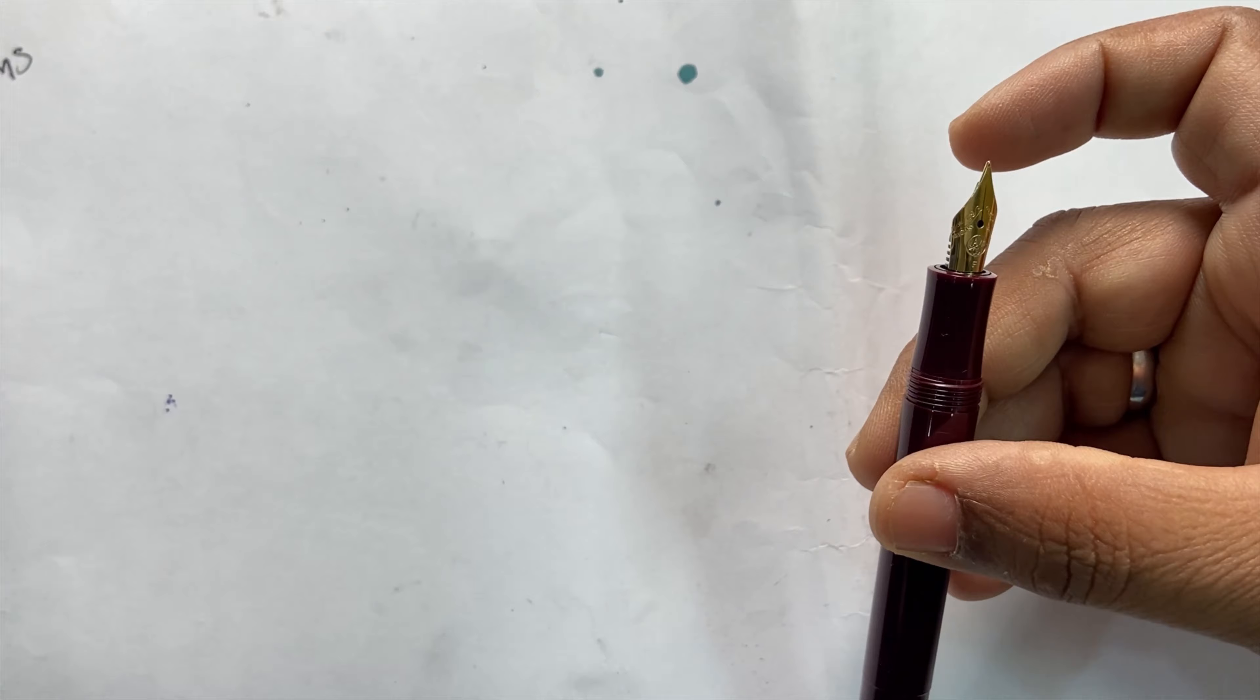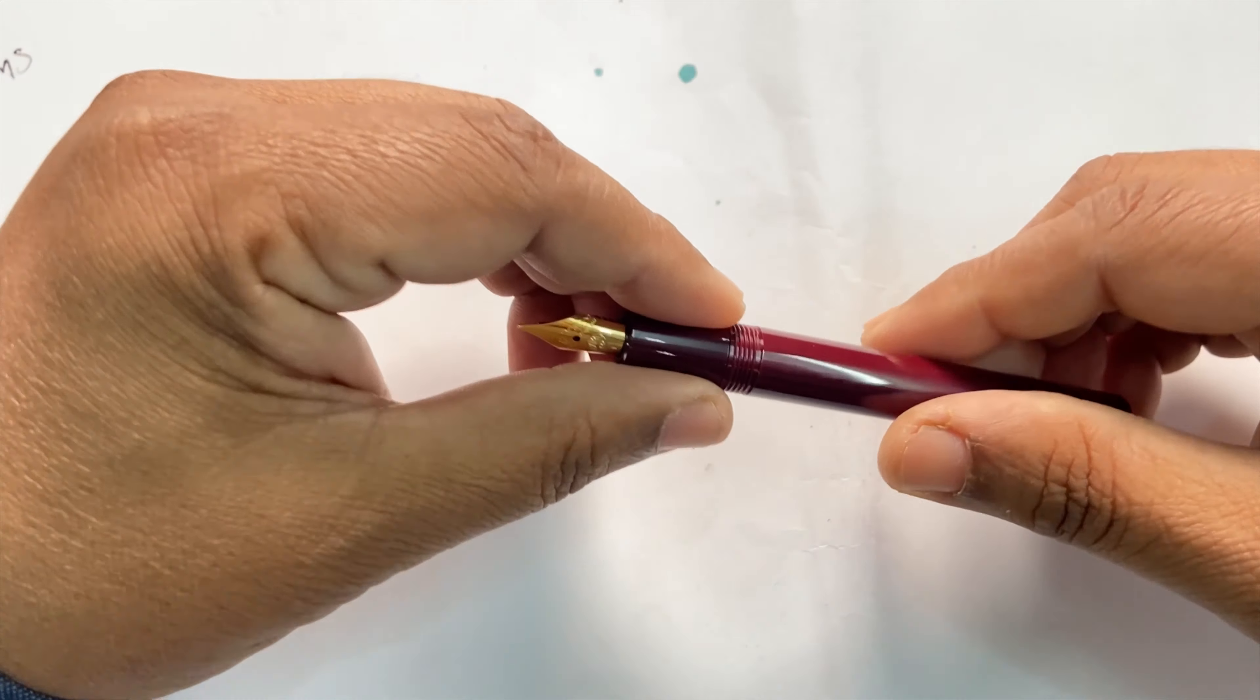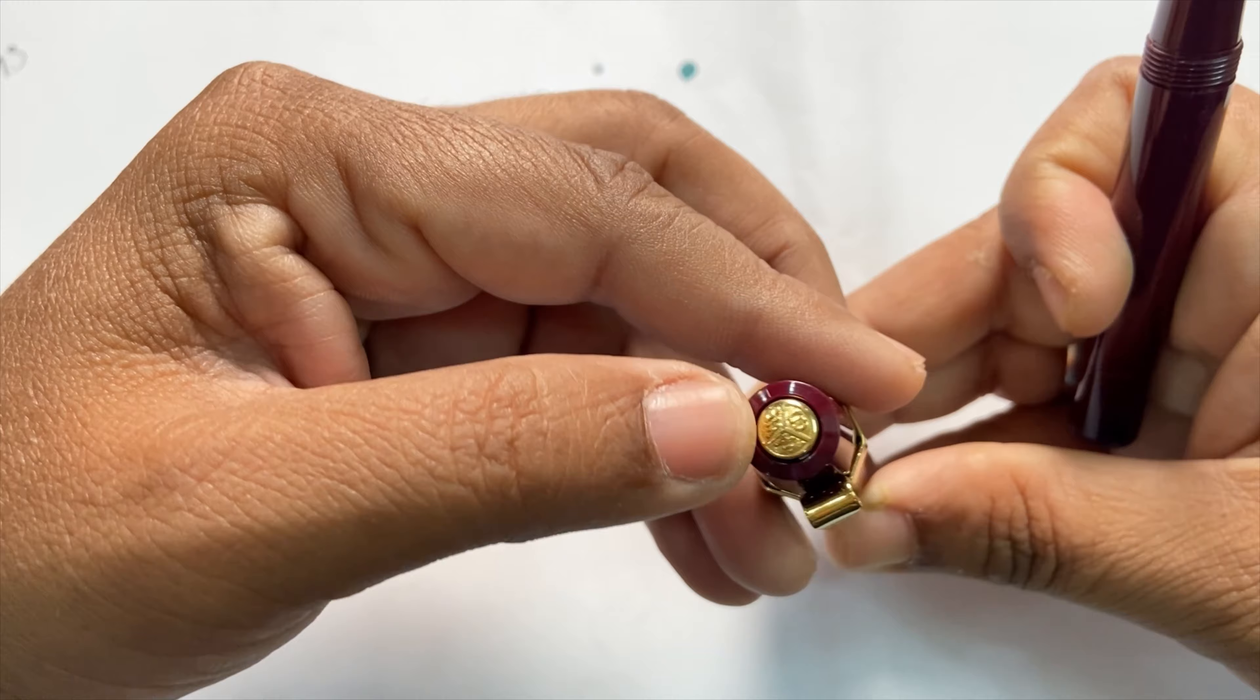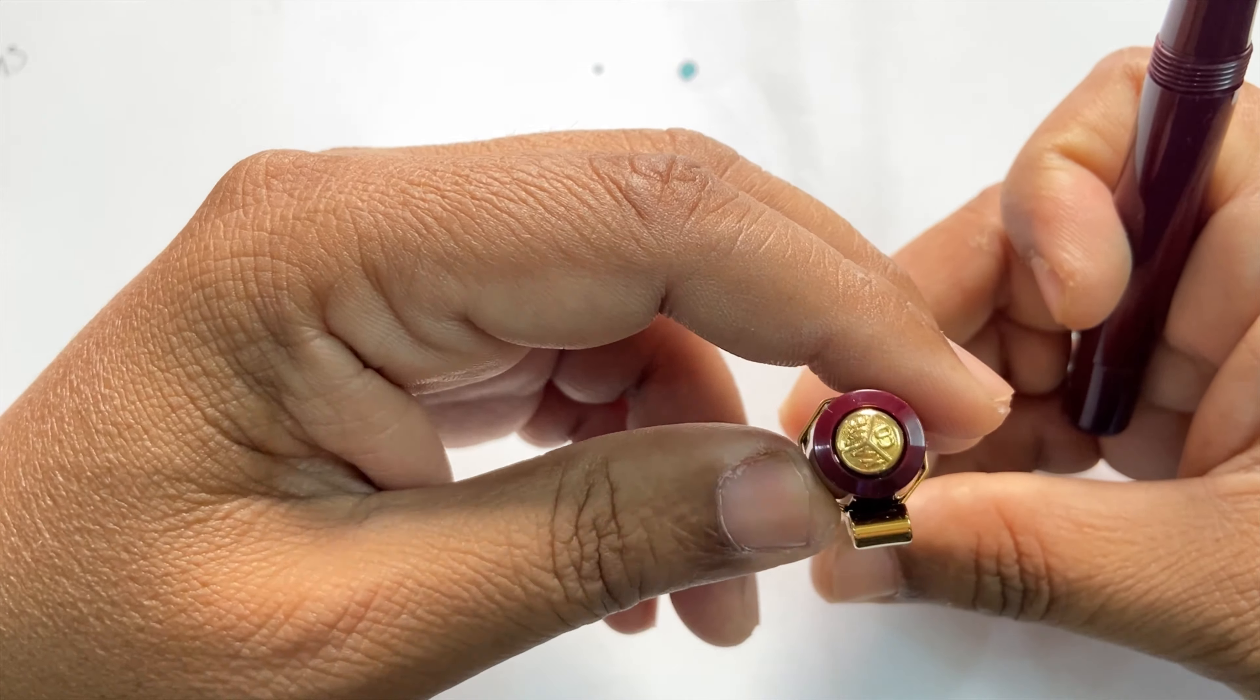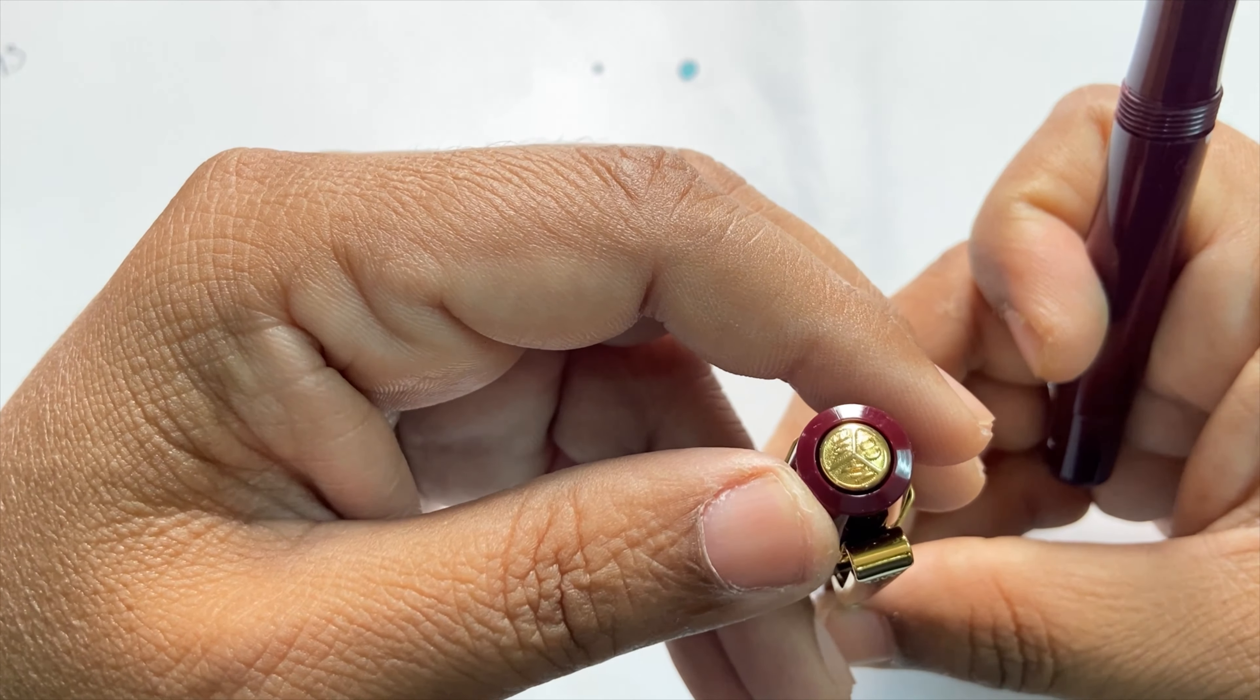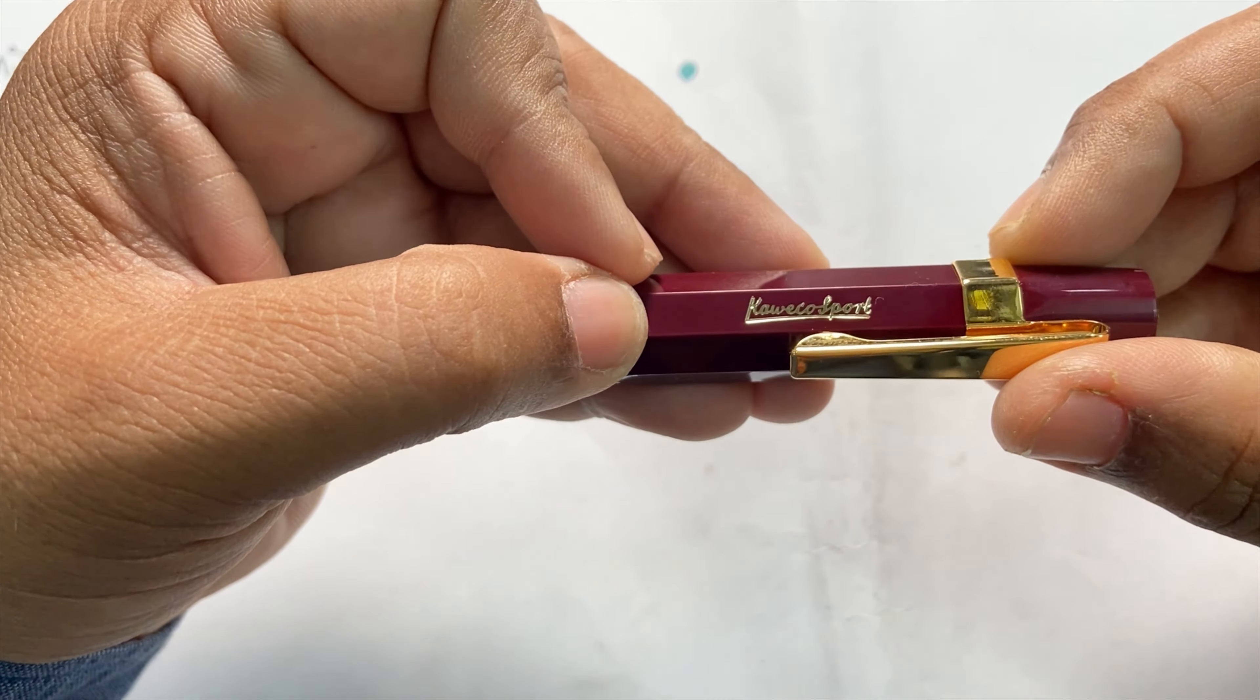So functionally, they are almost exactly the same. Now with regard to the cap, as you can see, the top end or the finial of the cap contains that Kaweco classic embossing—this circular shape divided into three equal zones accommodating two letters each. And this is a gold-stamped Kaweco Sport.